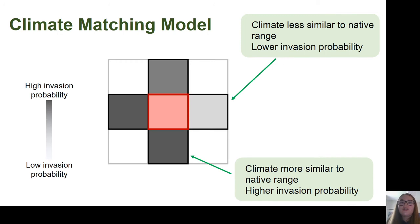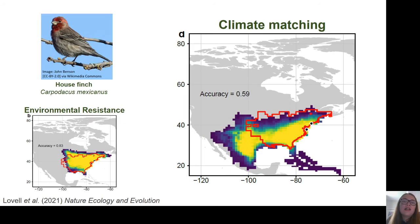Having shown that environmental resistance outperformed a model of random dispersal, we wanted to compare it to more traditionally used climate-based models. We ran several climate models, but I'm only going to highlight one here. This model is based on climate matching to the invading species' native range — the alien species is more likely to spread into areas that are more similar in climate to the conditions it occupies within its native range. We used the combination of climate axes that best predicted the species' native range, with all information derived from the native range, as it would be in practice when predicting the spread of a newly introduced alien species.